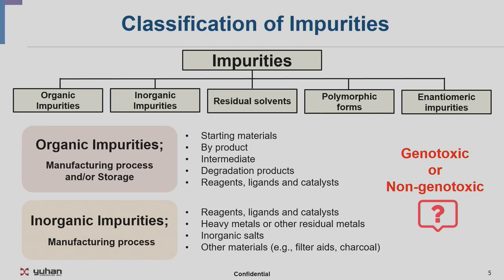Impurities can be categorized as organic impurities, inorganic impurities, residual solvents, polymorphic forms, and genotoxic impurities. Organic impurities can come from starting materials, byproducts, intermediates, degradation products, reagents, ligands, and catalysts. Inorganic impurities can occur from the manufacturing process, including reagents, heavy metals, or other residual metals, inorganic salts, and other materials. From degradation and synthesis, whether they are genotoxic or non-genotoxic is really important, and we must have certain control over them.